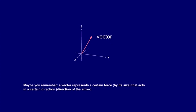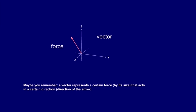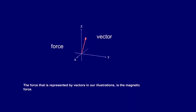Maybe you can remember: a vector represents a certain force by its size, that acts in a certain direction — the direction of the arrow. The force represented by vectors in our illustrations is the magnetic force.